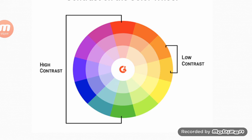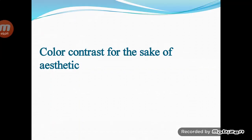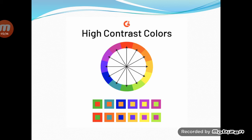When using complementary colors, we also have to consider value — the darkness or lightness of color. Without contrast in value, the contrast created by complementary colors can be counterproductive. For the sake of aesthetics, choosing high-contrast colors for a design is a bold move. Below are examples of high color contrast — these pairs are directly across from one another on the color wheel.